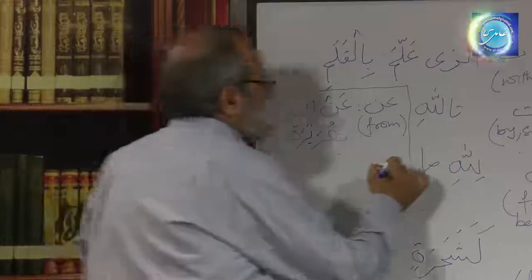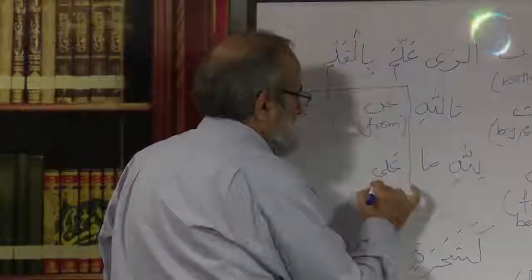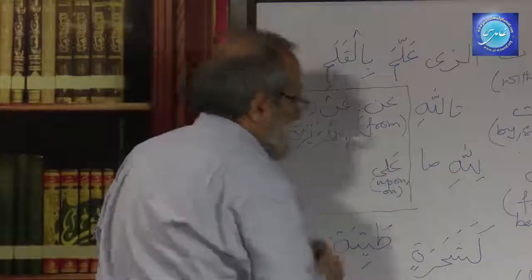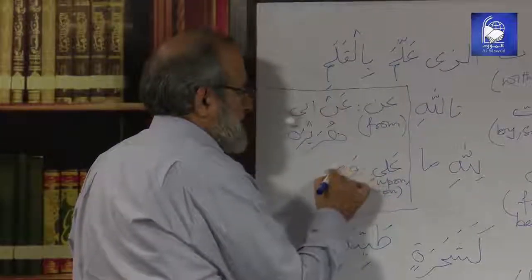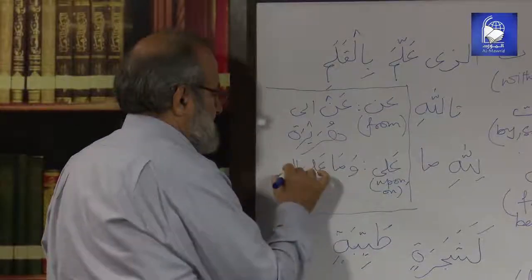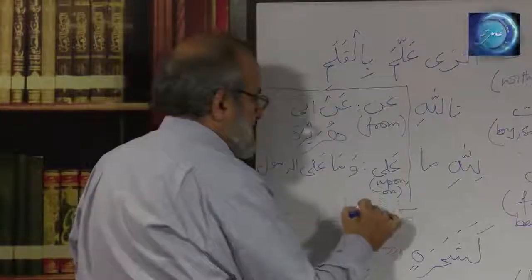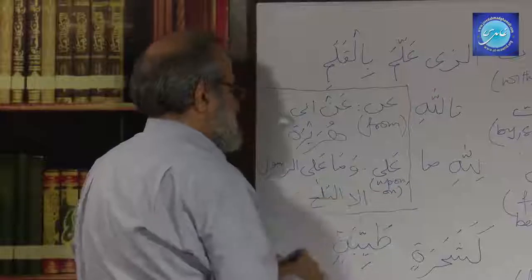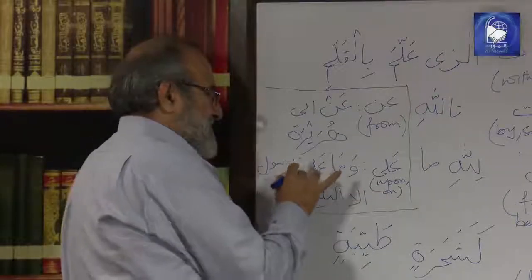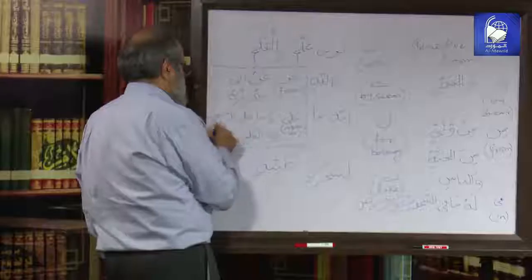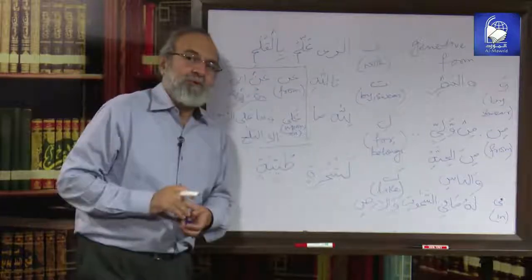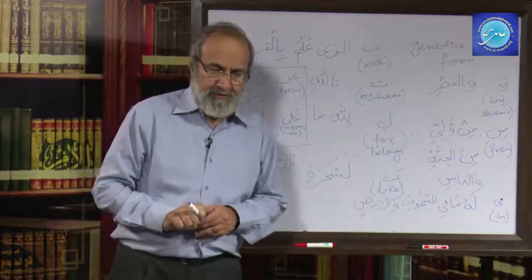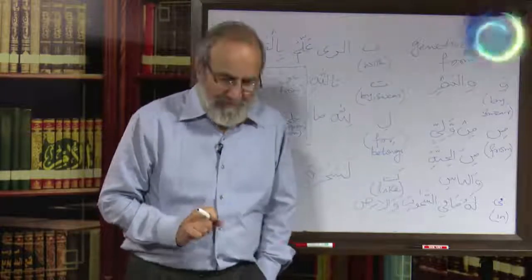After An, we have Ala, which means 'upon' or 'on'. The Quran says: 'wa maa ala al-rasool illa al-balaag' — 'there is no responsibility on the messenger except conveyance.' Ala comes before al-rasool and has caused al-rasool to take the genitive form, the Jar i'rab.